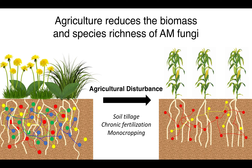I study how agriculture affects communities of AM fungi. As agriculture is by far the most widespread form of land usage in the world, there has been a lot of work trying to understand the impacts of agriculture on soil microbial communities. We know that agriculture reduces the abundance and species richness of AM fungi by a number of mechanisms. For instance, soil tillage breaks networks of hyphae, impacting the ability of the fungi to acquire nutrients and colonize plant roots. Chronic fertilization reduces the amounts of carbohydrates plants allocate below ground, which reduces AM fungal biomass. And monocropping farm fields with single species of plants reduces the amount of potential hosts for the fungi. So agricultural AM fungi are reduced in biomass and tend to be dominated by disturbance-tolerant species that invest highly in rapid reproduction.